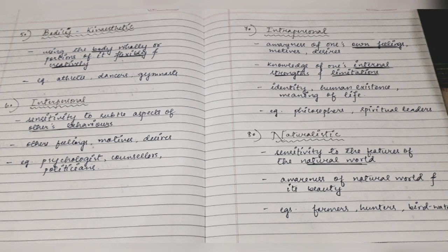The seventh type is Intrapersonal Intelligence. Unlike interpersonal intelligence — where you understand the internal feelings, motives, and desires of others you interact with — intrapersonal intelligence is the awareness of one's own feelings, motives, and desires. Persons high on this type of intelligence have knowledge of their own internal strengths and limitations.